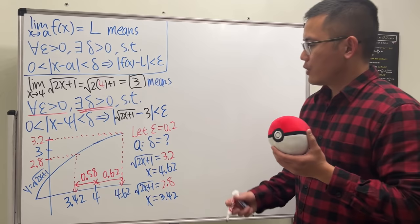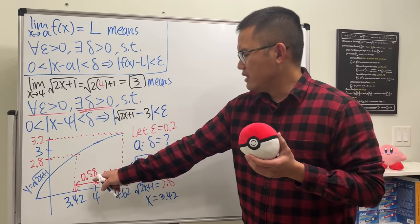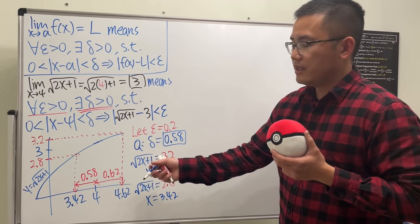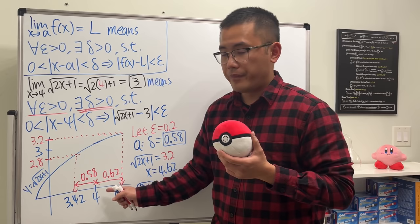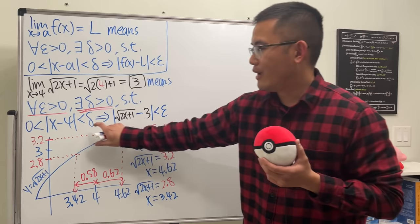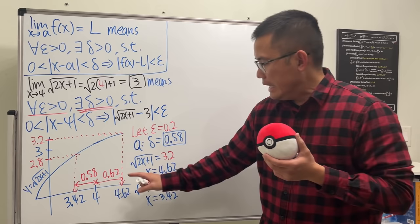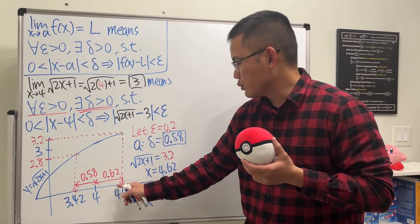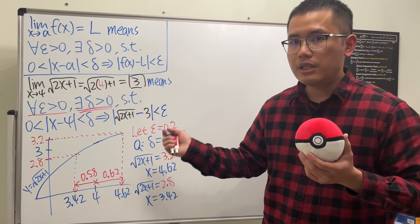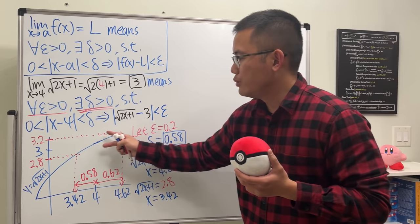When epsilon equals 0.2, we have distances 0.62 and 0.58. Which number do we choose for delta? Pick the smaller one — the answer is 0.58. Why? If x is inside the delta neighborhood, going up shows the y-value is inside the epsilon neighborhood. If we picked 0.61 instead and moved left from 4 by 0.61, we'd be slightly outside, and going up shows that point is outside the epsilon region. So always pick the smaller distance.